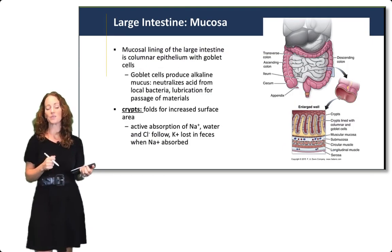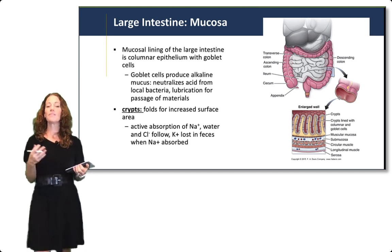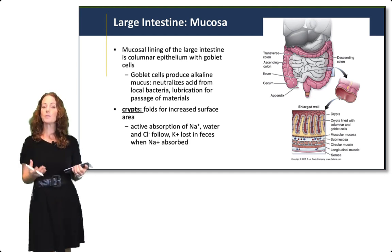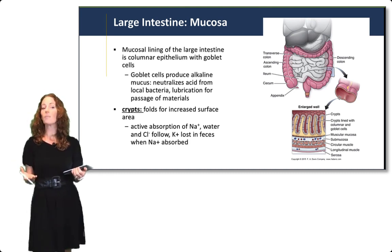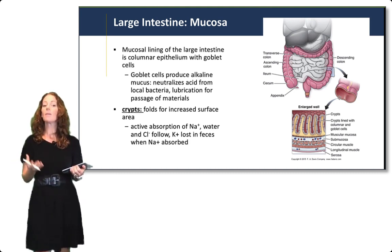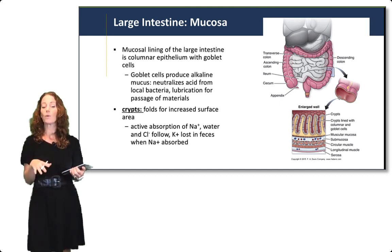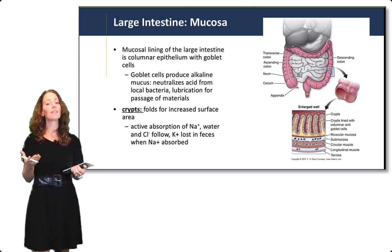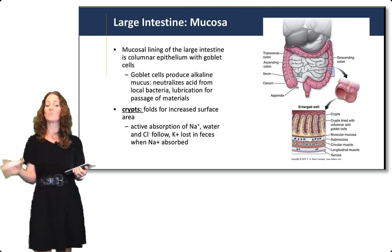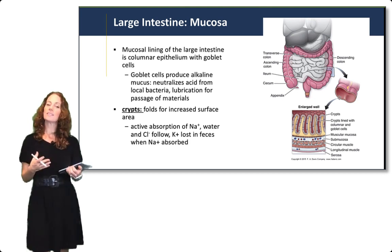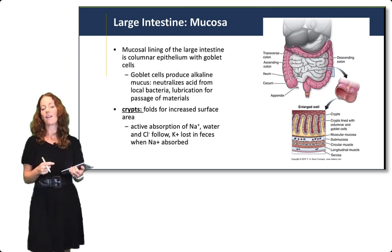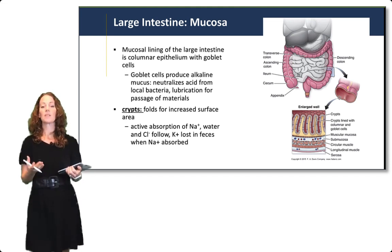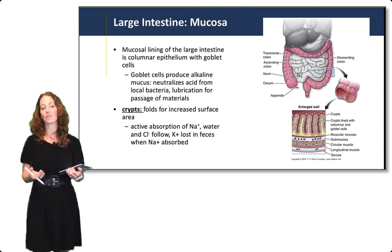Now for more specifics on the structure and function of the large intestine. First, the mucosa: the mucosal lining of the large intestine is a columnar epithelium with a large number of goblet cells. Goblet cells produce mucus, which can neutralize acid from local bacteria and provide lubrication for the passage of materials through the colon. The large intestine also has crypts — folds that increase surface area — helping with active absorption of water and electrolytes.